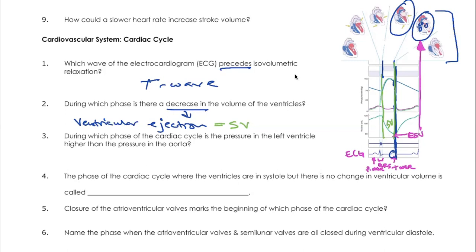The next question asks during which phase of the cardiac cycle is pressure in the left ventricle higher than pressure in the aorta. Looking at the diagram, ventricular pressure is the green line and aortic pressure is the blue line. Ventricular pressure is higher only during the period of ventricular ejection, so the answer is ventricular ejection.